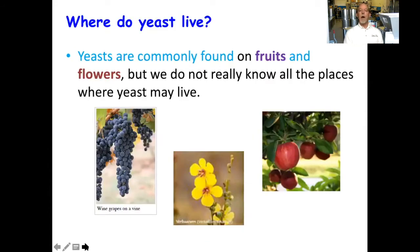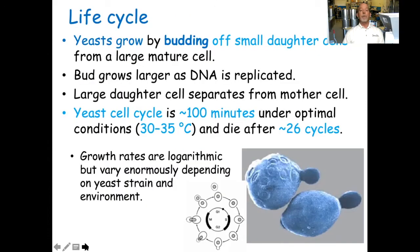Where do yeast live? They are commonly found on fruits and flowers, but we really do not know all the places where yeast may live. Yeast grow by budding off small daughter cells from a large, mature cell. Buds grow larger as the DNA is replicated inside the cell, and large daughter cells separate from the mother cell. The yeast cell cycle takes approximately 100 minutes under optimal conditions — 30 to 35 degrees centigrade — and they die after about 26 cycles, upon which they sink to the bottom of your wine tank, forming lees.